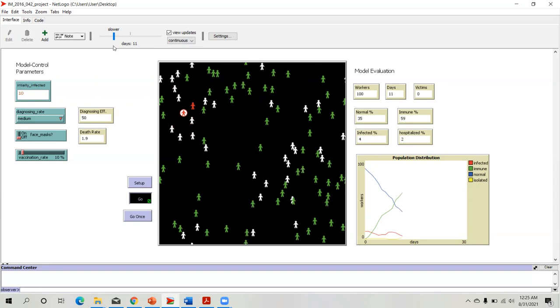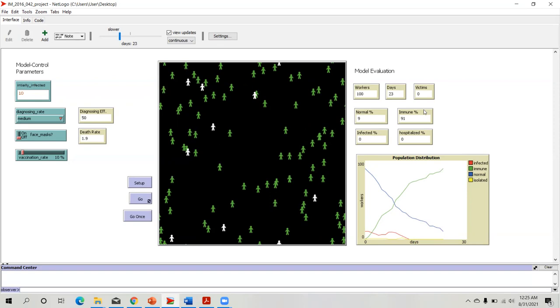Let me increase the speed a little bit. You can see later, when the system reaches more than 90% of immunity and no cases of infected workers and no cases of hospitalized workers, the system comes into termination. All the time, there will be 100 workers in the system. In this particular simulation run, there are no deaths.